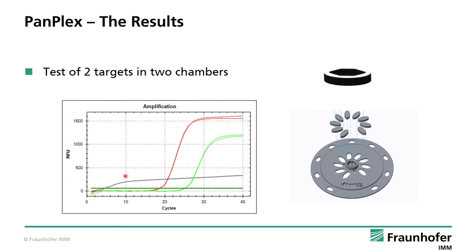Here I present the results of a PCR reaction performed in two different chambers analyzing two different targets. The reactions performed in parallel show the same results, demonstrating that the process parameters in each reaction chamber are identical. In addition, the results demonstrate that a continuous detection yields a typical amplification curve known from standard PCR devices.